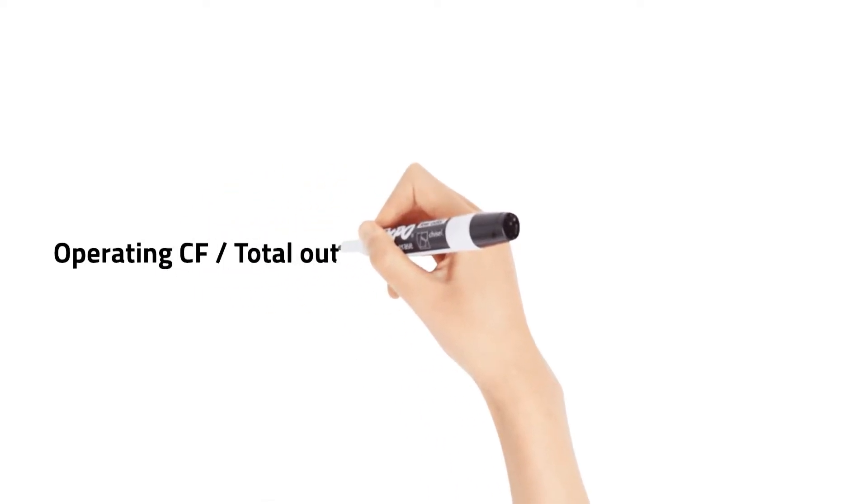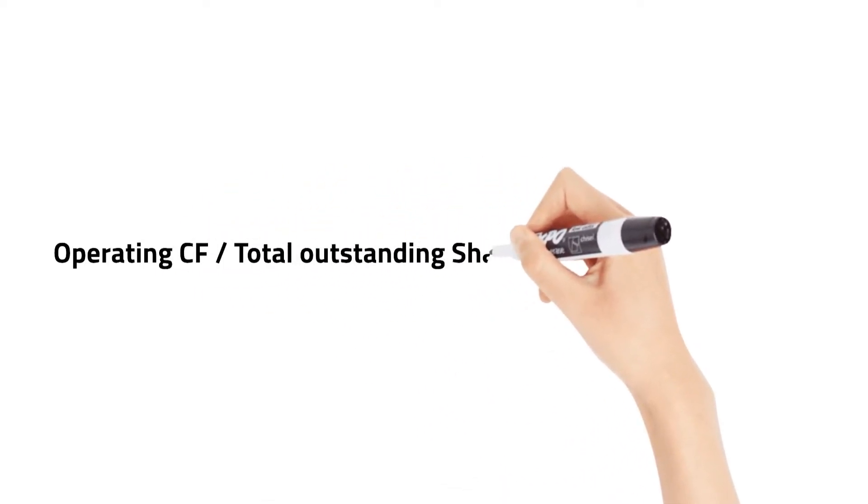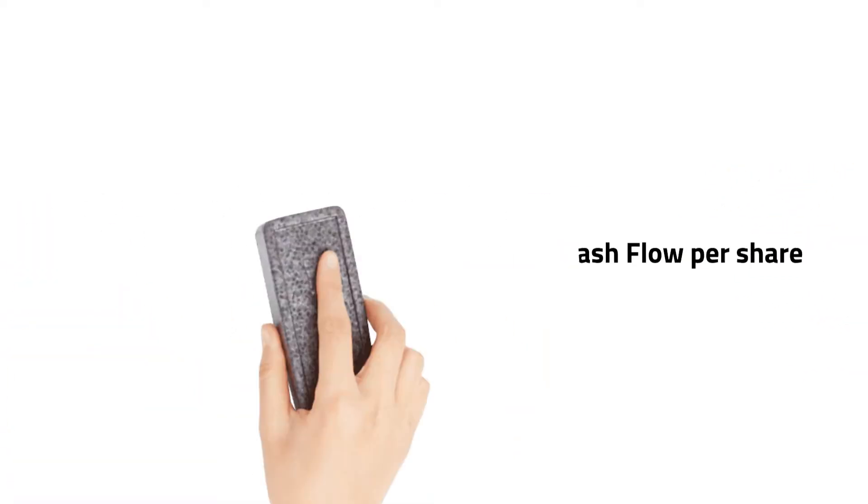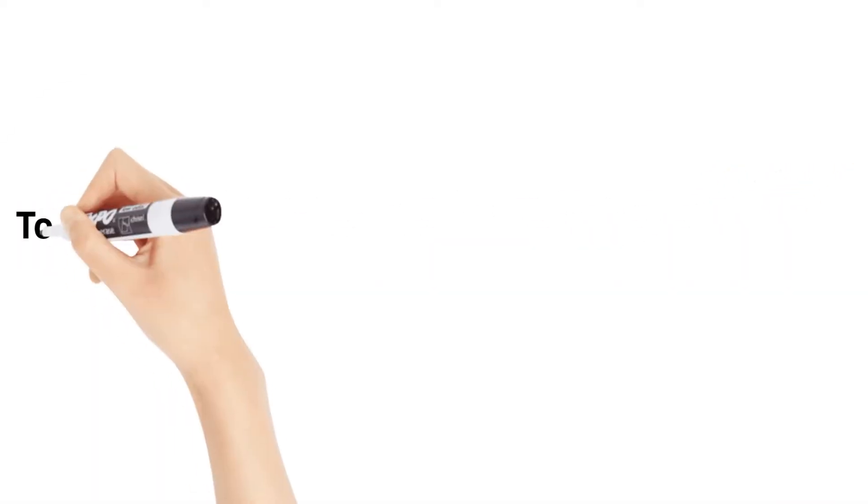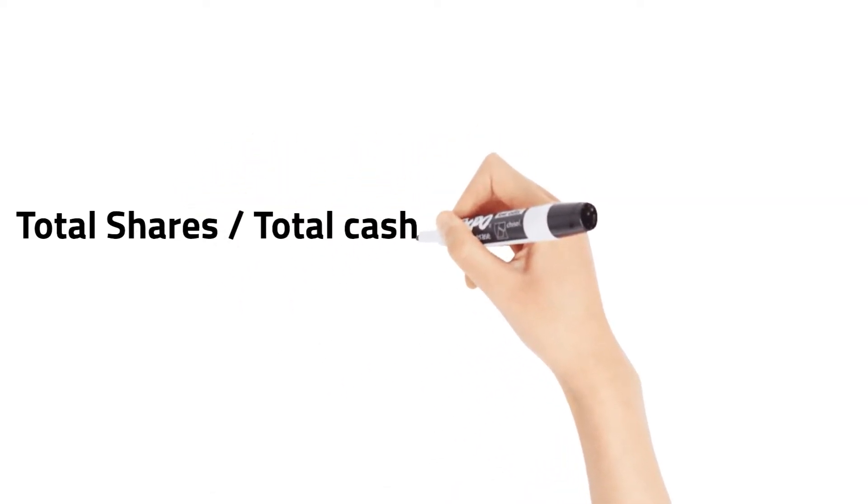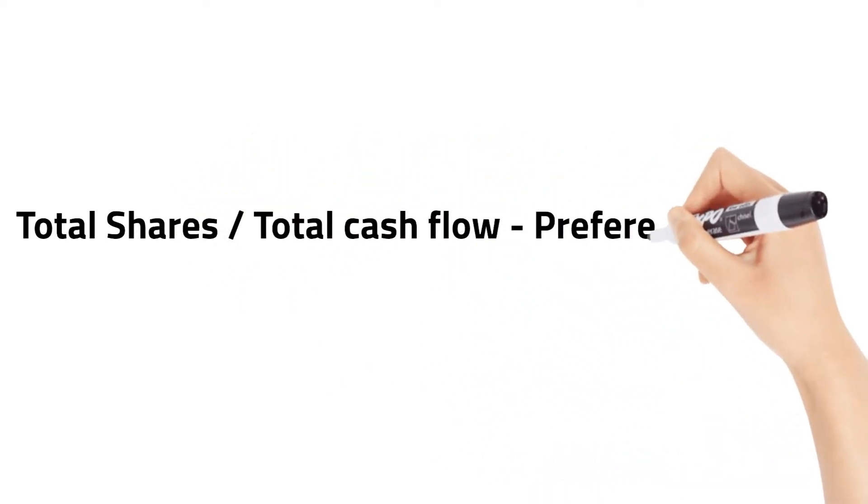The cash flow per share is determined by taking the total operating cash flow, which is then divided by the number of outstanding shares. We divide the total cash flow of a company minus any preferred dividends by the total number of all outstanding shares.